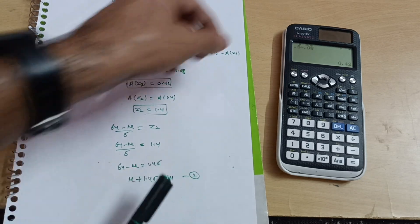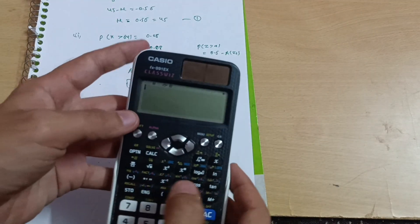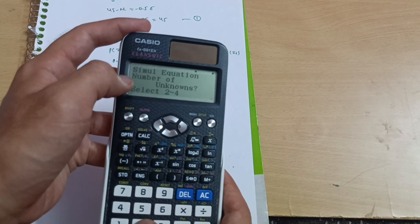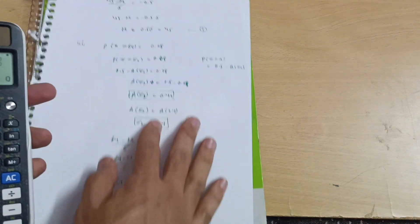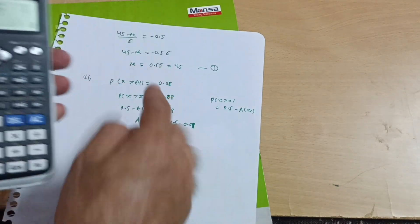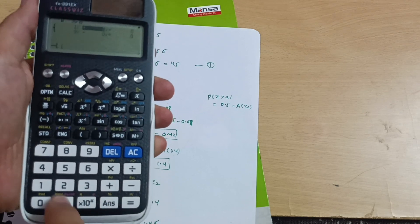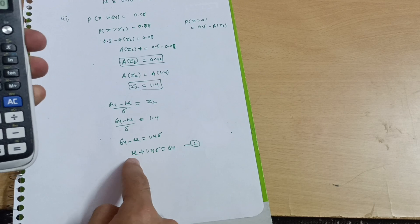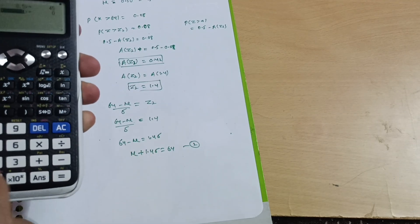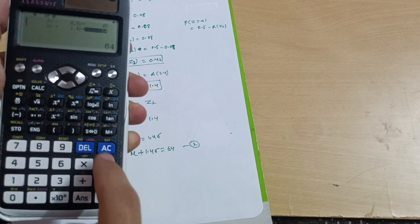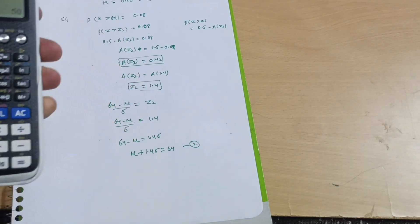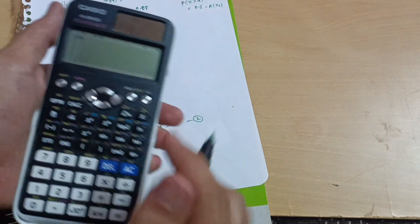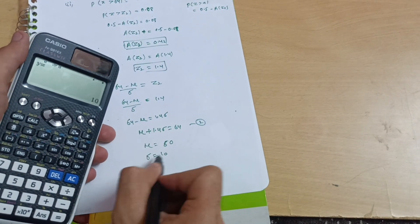Now solving the simultaneous equations — equation 1: mu − 0.5 sigma = 45, equation 2: mu + 1.4 sigma = 64 — using the calculator's simultaneous equation mode with two unknowns, with coefficients entered accordingly, we get mu = 50 and sigma = 10.